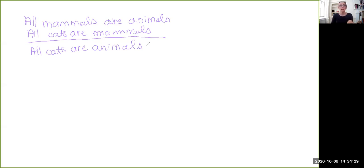We can start by identifying all of the categorematic terms. So we've got three of them. We've got mammals here. That's a categorematic term. And then we have animals. That's another one. And then we have cats.